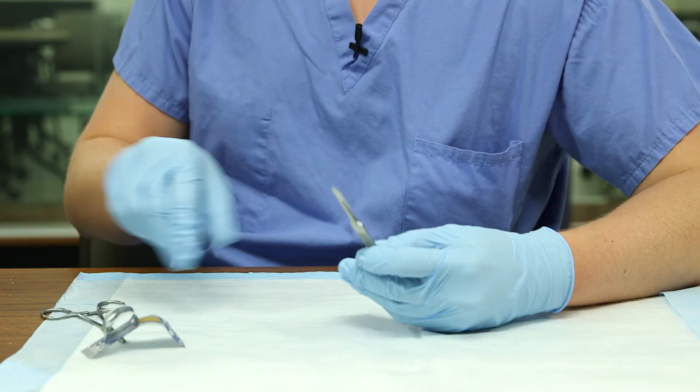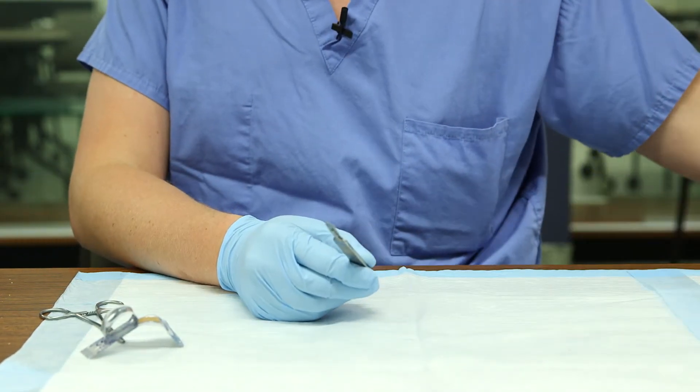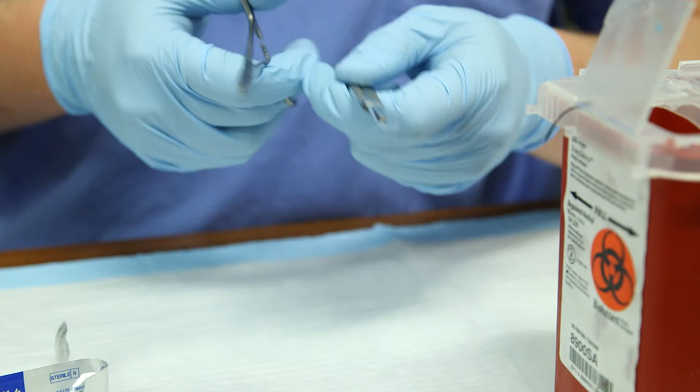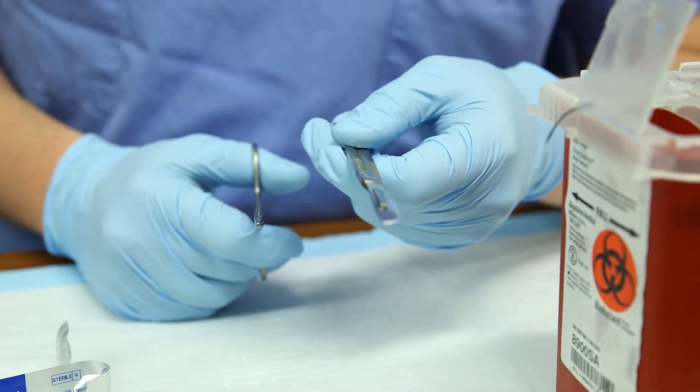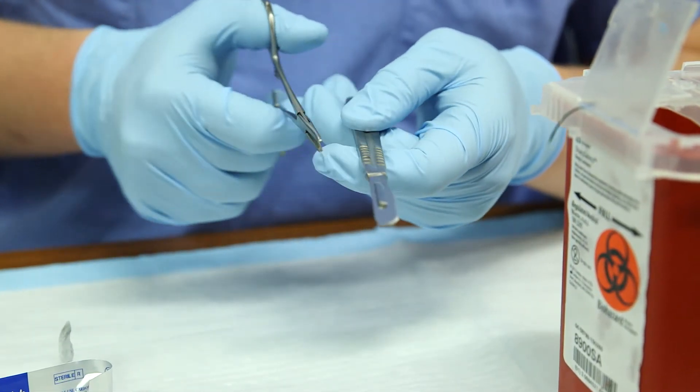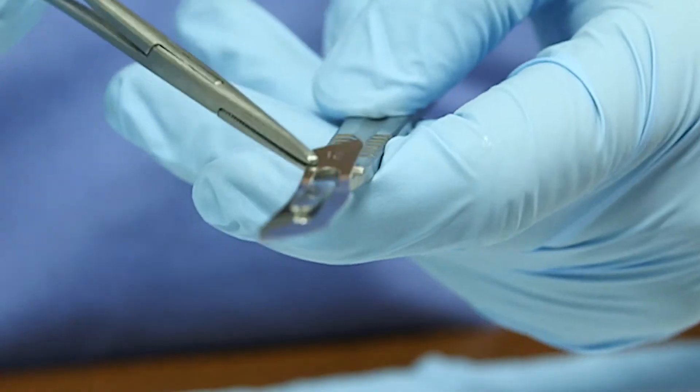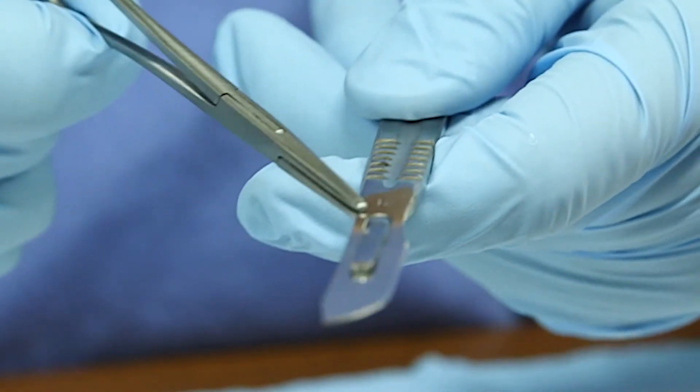Before you are ready to replace the handle, make sure you have a sharps container close by. With the blade end away from yourself and your hands together, use the forceps to lift underneath the end of the blade and gently push it forward.